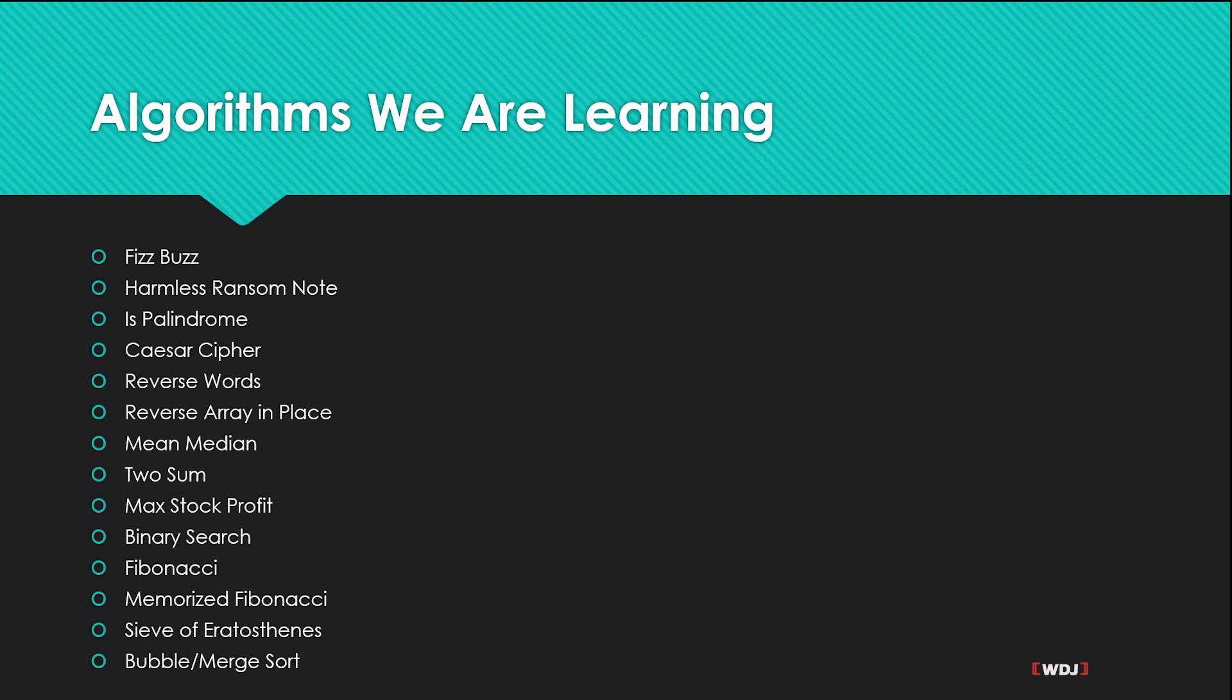They've asked me - I applied to three of them, didn't get into one of them, but all three of them did ask me for the max stock profit, which is basically they give you an array of numbers and tell you from where would I have bought this stock and where could I sell it to get the max profit. But yeah, these are the algorithms we're going to be learning.